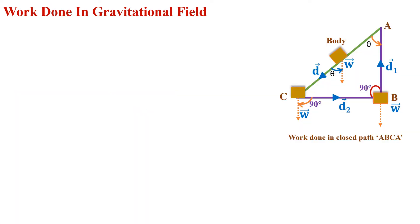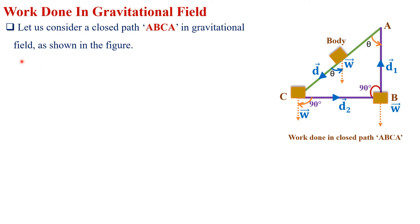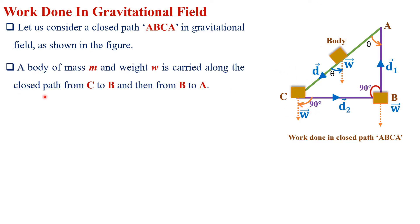Now we are going to calculate work done in a closed path. Let us consider a closed path A-B-C-A. In this closed path, we are going to calculate work done on an object of mass m. A body of mass m and weight w is carried along the closed path from C to B, then from B to A, and then from A to C.